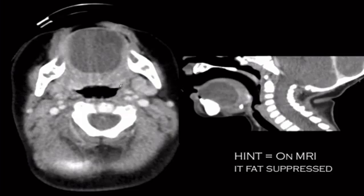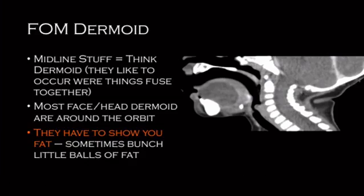We've got a cystic-looking thing on the floor of the mouth, and I'm giving you a hint that it's fat-suppressed. If there's fat in a mass, you think teratoma or dermoid or something like that. So this is a floor of the mouth dermoid — they do exist. Dermoids like to occur at midline structures, where things come together, though in the head and neck it's typically around the lateral portion of the orbit. They have to show you fat to make you call it a dermoid.